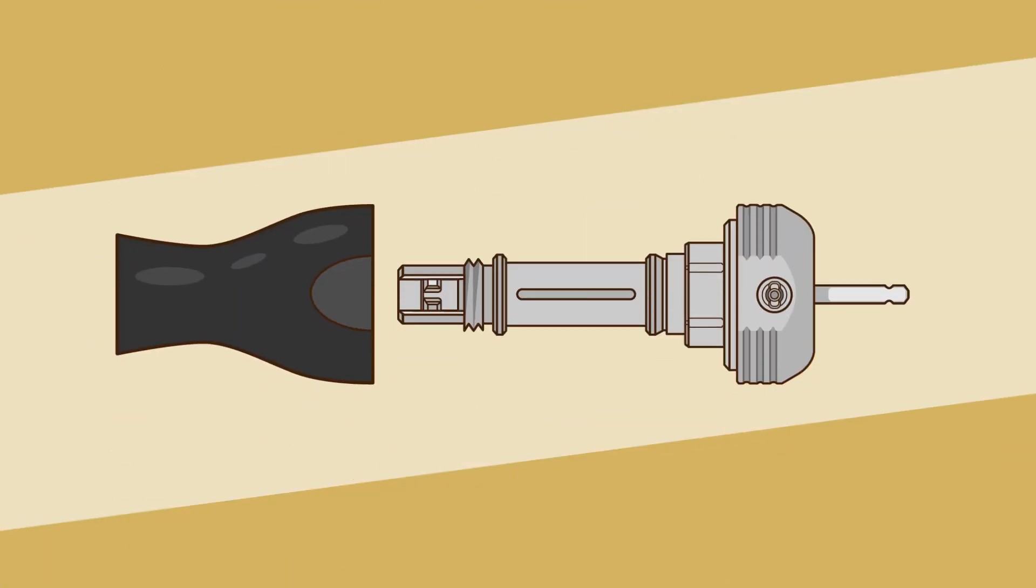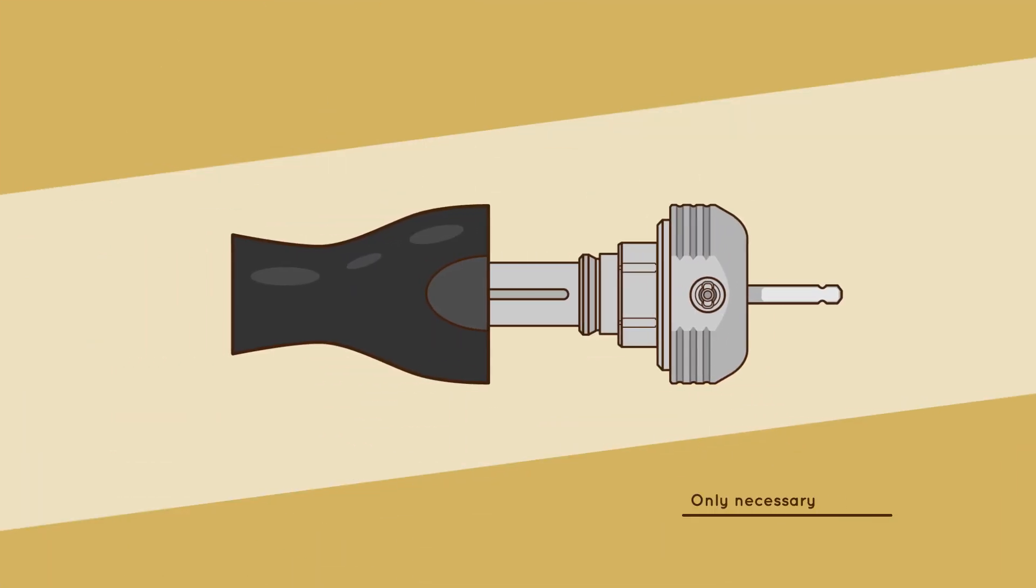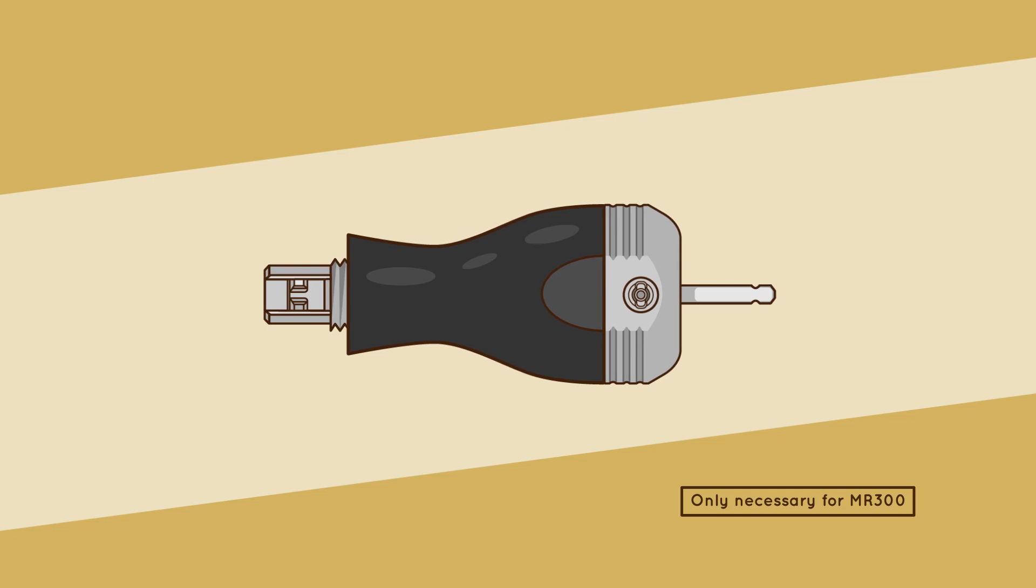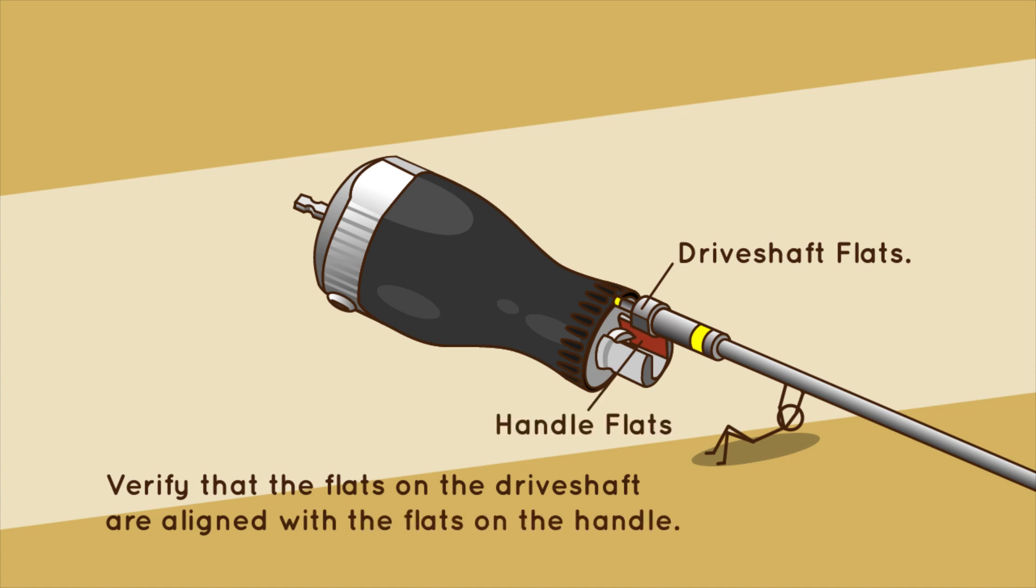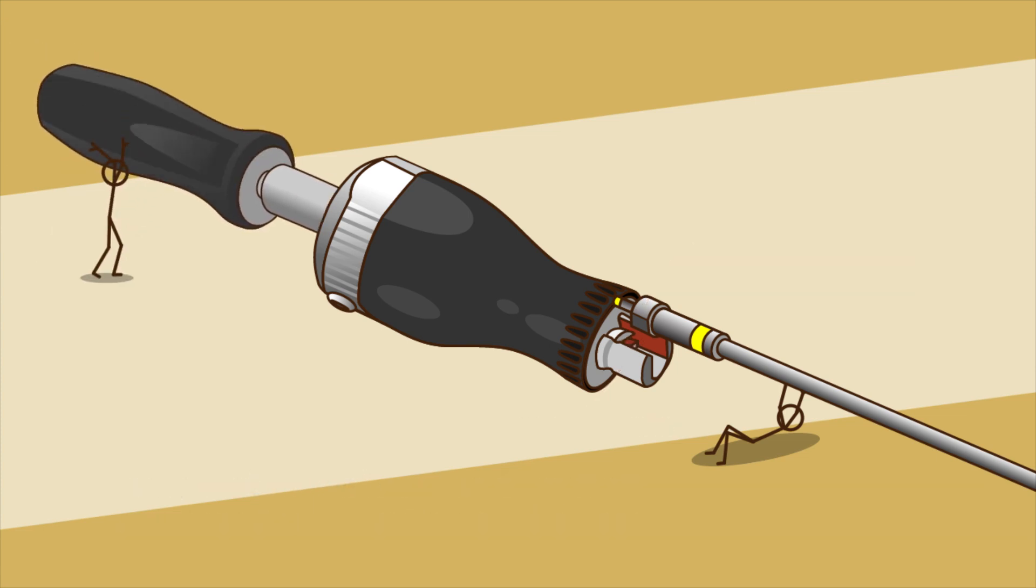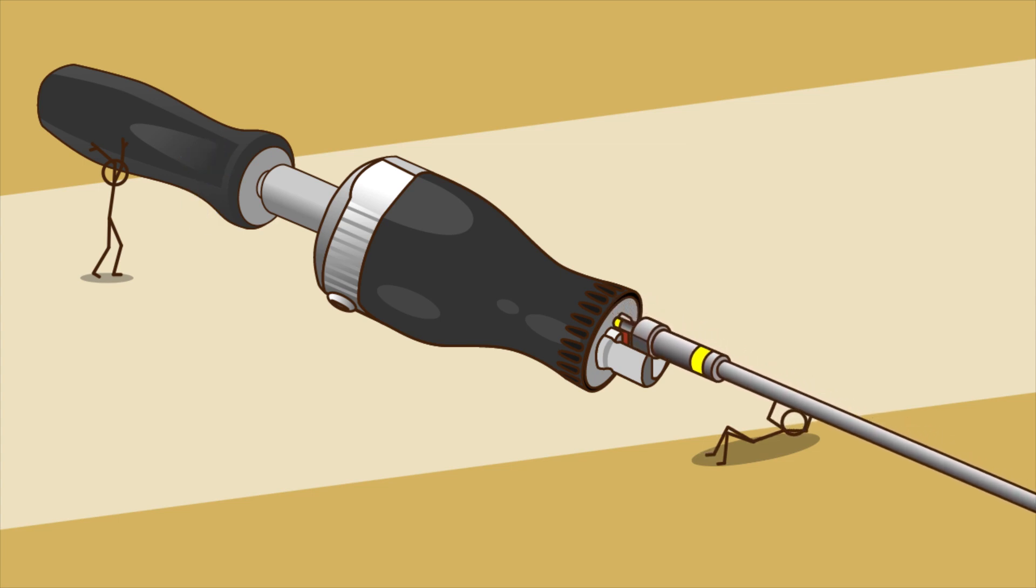Step 2. Slide the handle assembly onto the mechanical assembly until it bottoms out. Verify that the flats on the drive shaft are aligned with the flats on the handle. If not, use the torque handle to turn the drive shaft in a counter-clockwise direction until the flats line up.